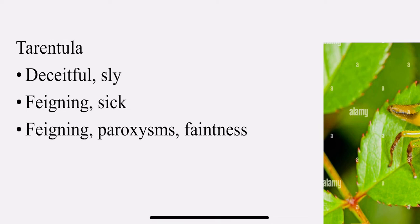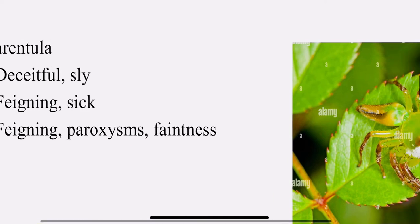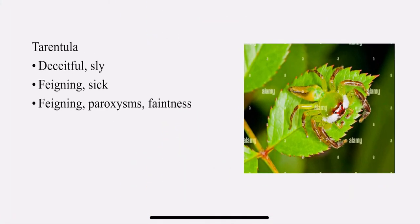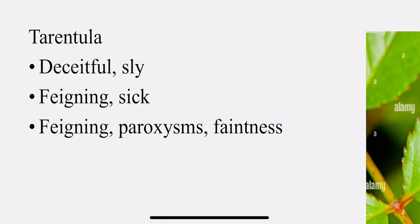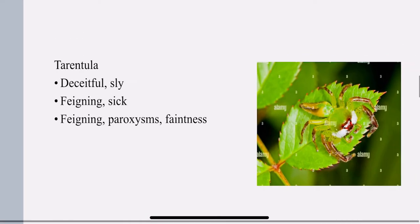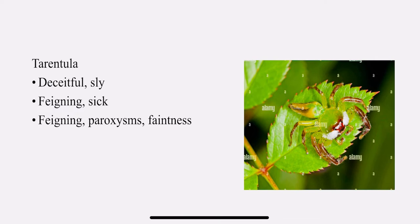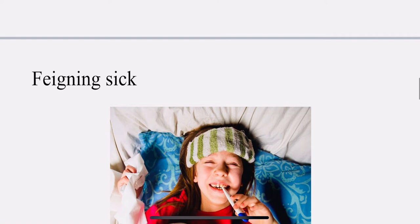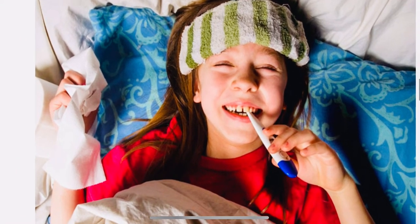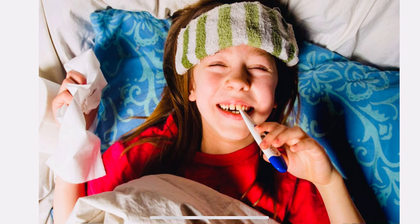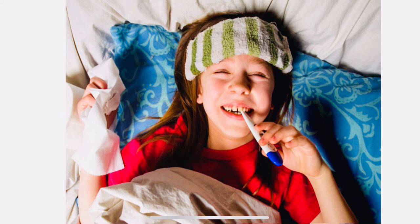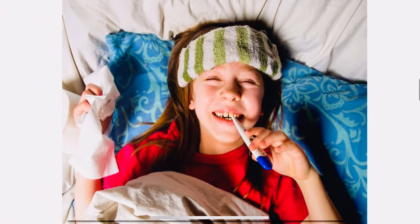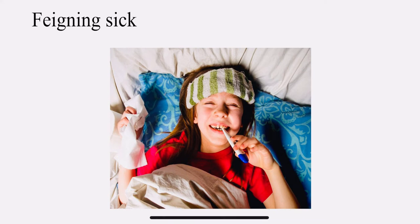Tarantula: they are deceitful and sly. This is the point I told I would discuss. They are deceitful and sly — feeling sick. They are faking — they put up an act that they are sick, but they are not actually sick. Feeling paroxysms and faintness — they pretend, they act as if they are fainting. You can see the kid here: she wants to miss school or something. She is laughing inside and holding a thermometer, which means she is faking her sickness. She is clearly faking it.